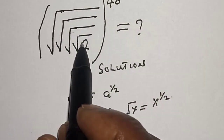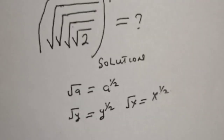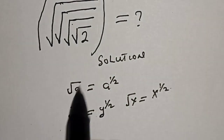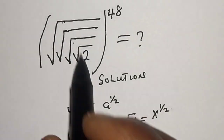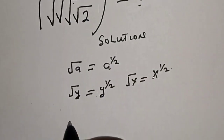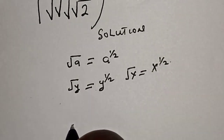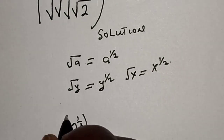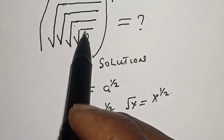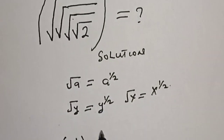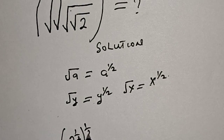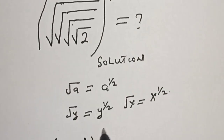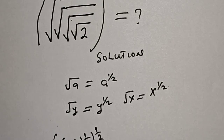Now let's see — this is root 2, this is root 2 with another root, another root and another root, all raised to power 48. This can be written as 2 raised to power 1 over 2, then with this other root, raised to power 1 over 2.